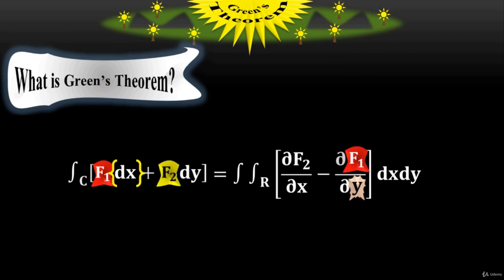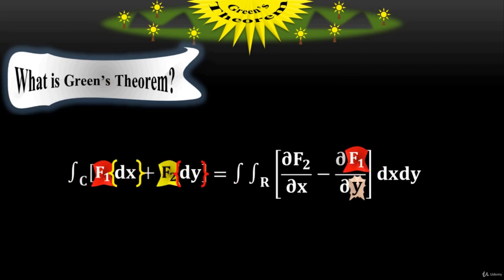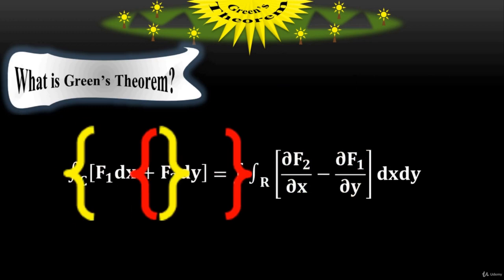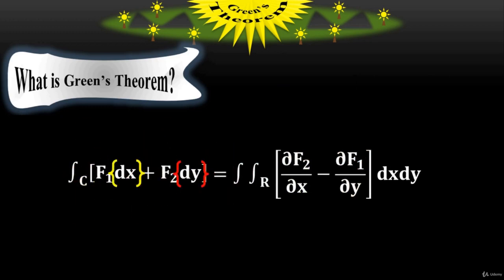Similarly, f sub 2 on the left side is with respect to dy. But on the right side, f sub 2 has been taken partially with respect to x. If I have dx and dy on the left side, you must put dx and dy on the right side as well.